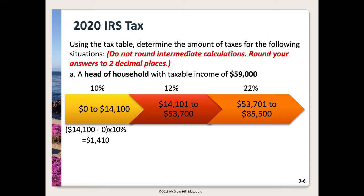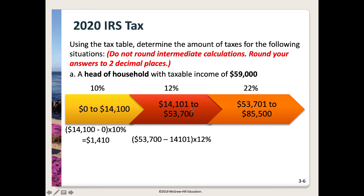Since there's still income remaining, we look at the next bracket at 12%, which covers income between $14,101 and $53,700. Thinking of these as buckets, we take the top end minus the lower end of the bracket and multiply by 12%, giving us $4,751.88.